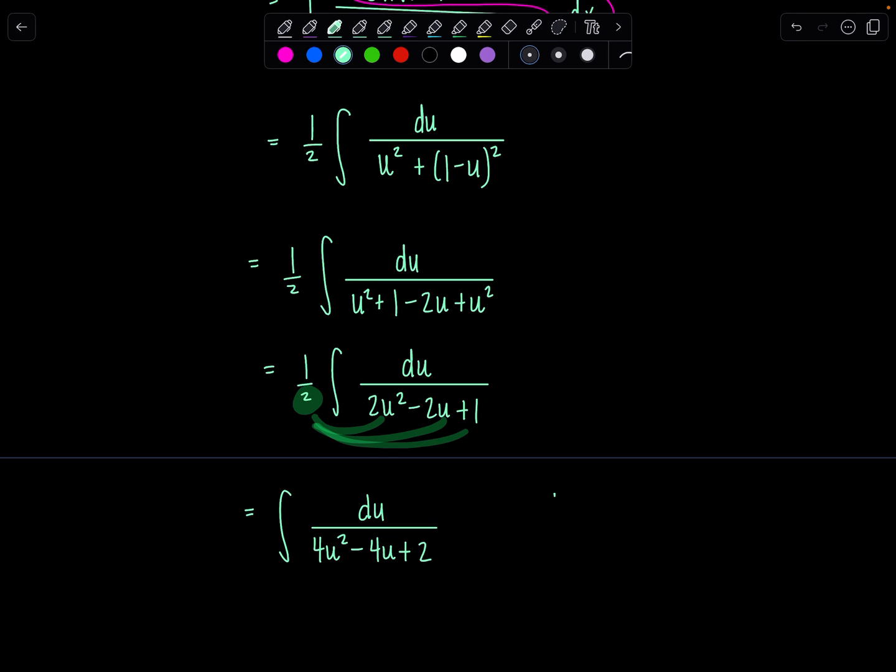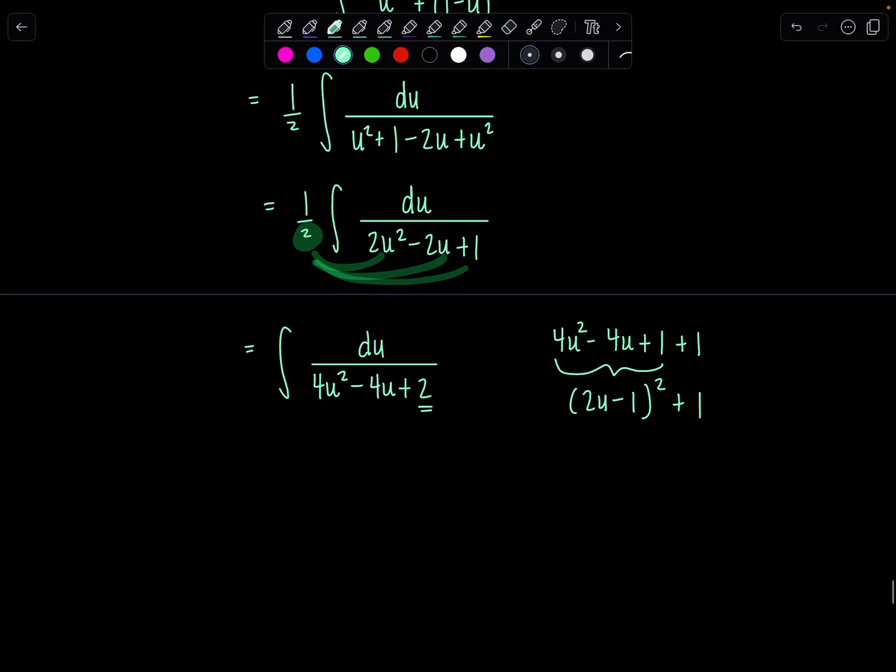We have integral du over. Now I have 4u squared minus 4u plus 2. And I like this better because 4u squared minus 4u plus 1 is a perfect square trinomial. And since I have plus 2, I'm just going to break it up into 1 plus 1. And then now this will all factor into 2u minus 1 quantity squared. And then I still have that plus 1. Oh, that worked out very nicely for us. So here we go then. Integral du over. Let me rewrite the denominator now as 2u minus 1 squared plus 1.